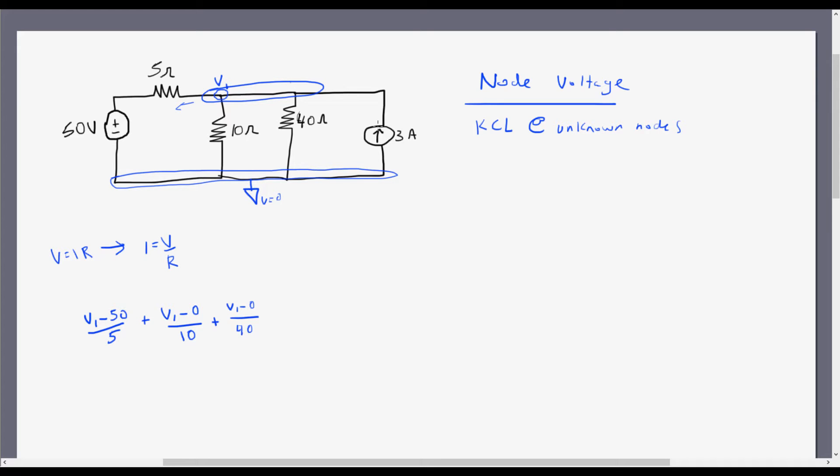And then since I actually have current entering this node, or entering from this branch instead of leaving, that's actually going to be minus 3. And I'm going to set it all equal to 0. So if I continue forward and I simplify, I'm going to get V1 minus 50 over 5, plus V1 over 10, plus V1 over 40, equals 3.